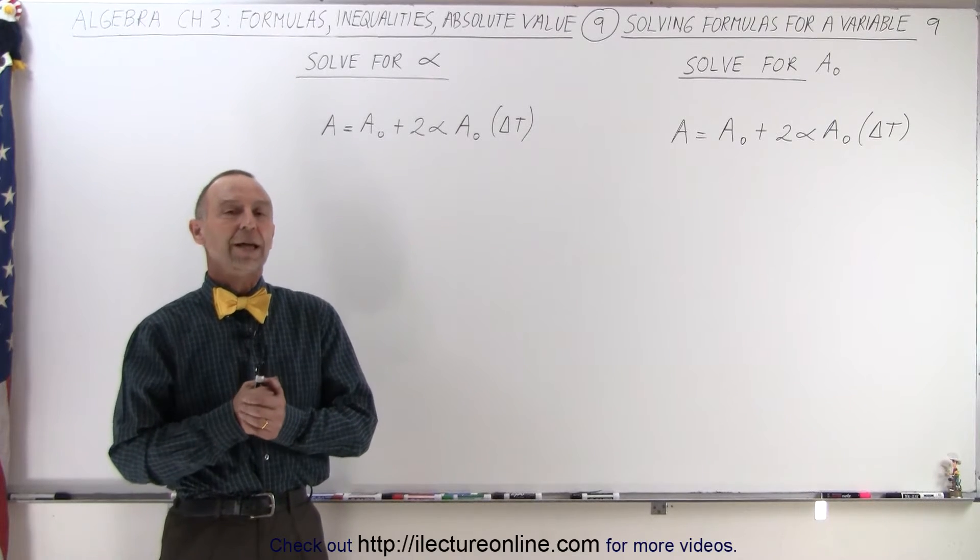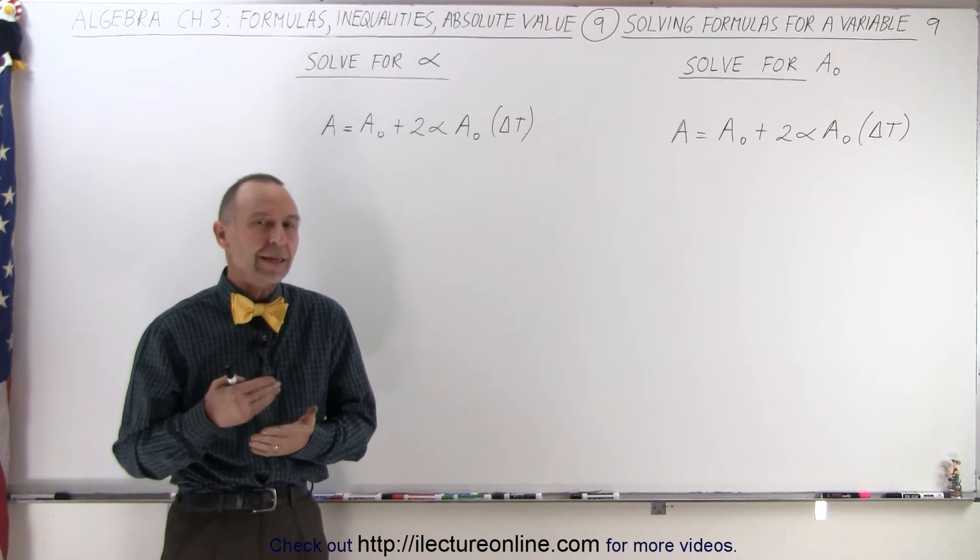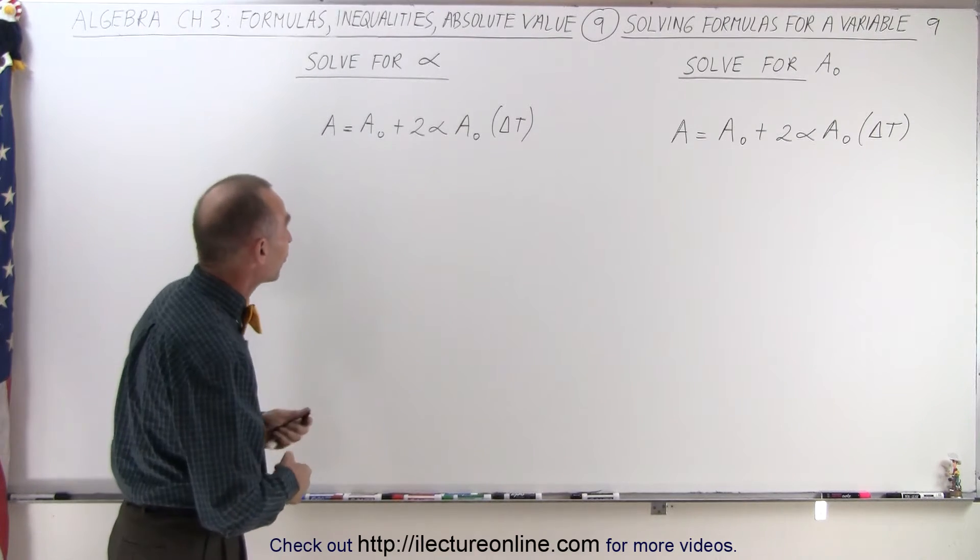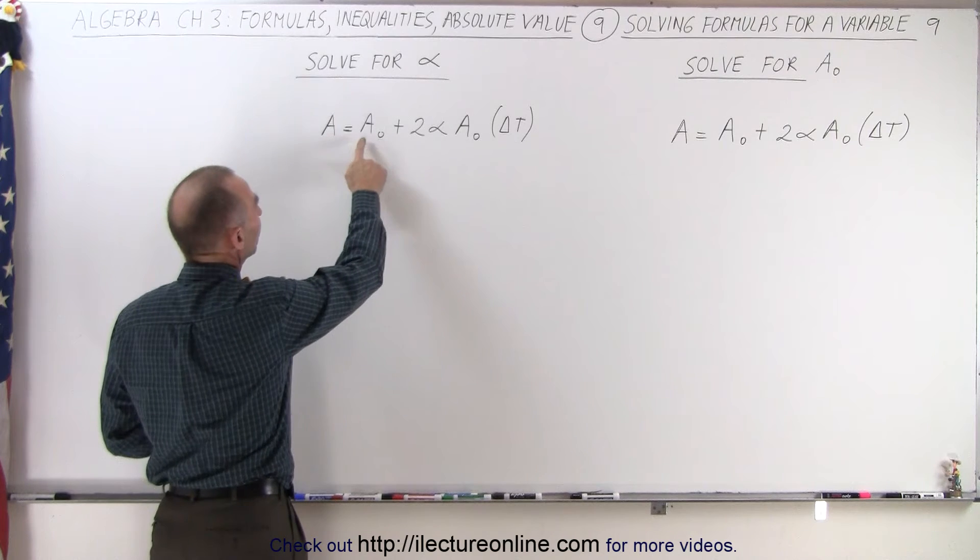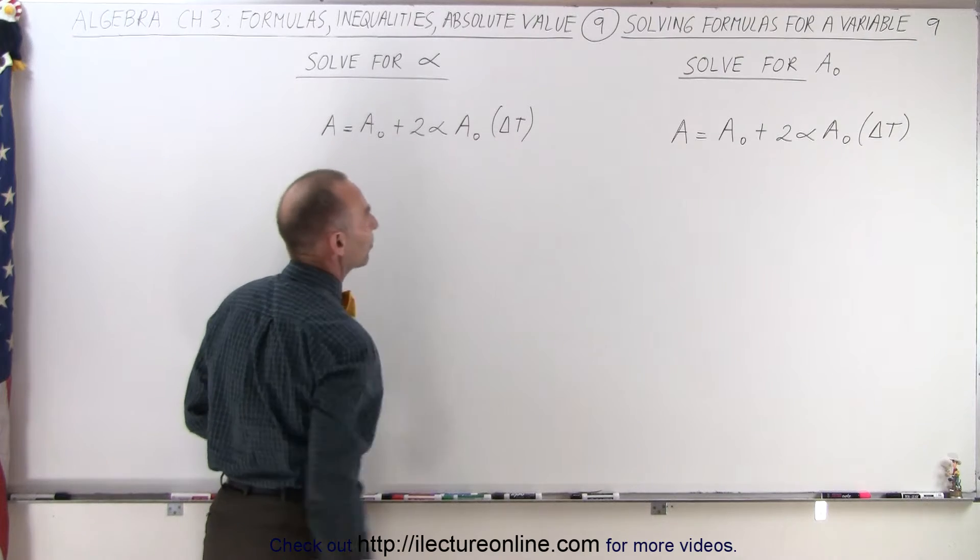Welcome to ElectronLine. Our next example is a formula that you will probably encounter if you take a physics course. The equation reads as follows: A equals A sub nought plus 2 times alpha A sub nought times delta T.